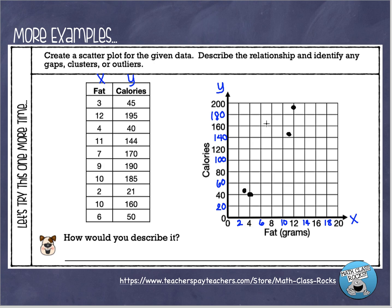Then 7 and 170 — seven is right between 6 and 8, and 170 is right between 160 and 180. Then 9 and 190 — nine is between 8 and 10, and 190 is right between 180 and 200. Then 10 and 185 — here's 10, and 185 is just a little lower. Then 2 and 21 — here's 2, and 21 is just a tiny bit above 20. Then 10 and 160 — another nice point.